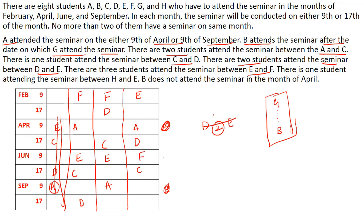Now we substitute this information everywhere. The next clue: there is one student attending the seminar between H and D. Between H and D there is a gap of only one student. Checking each possibility: if E is here, one place, H can be placed — but some positions are eliminated because A is already there. After working through all cases, only certain valid placements for H remain.